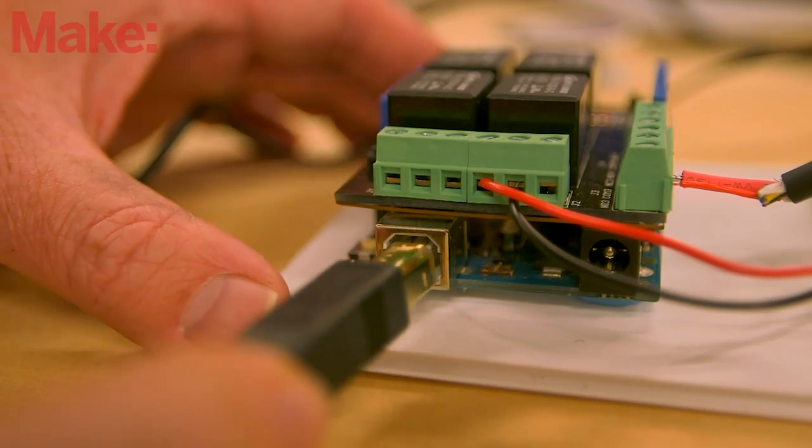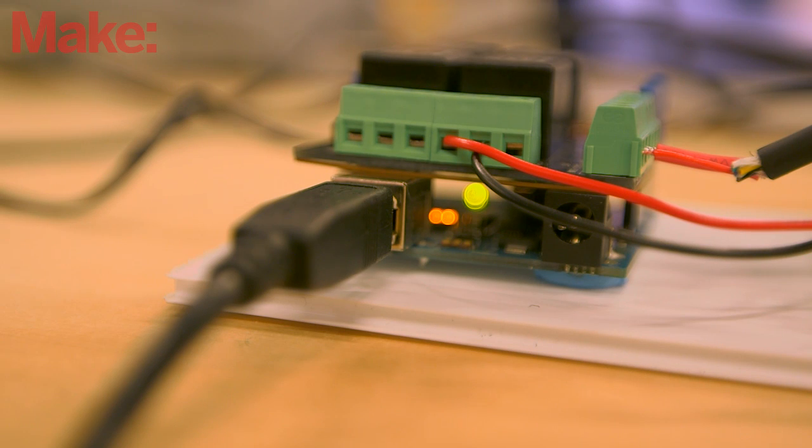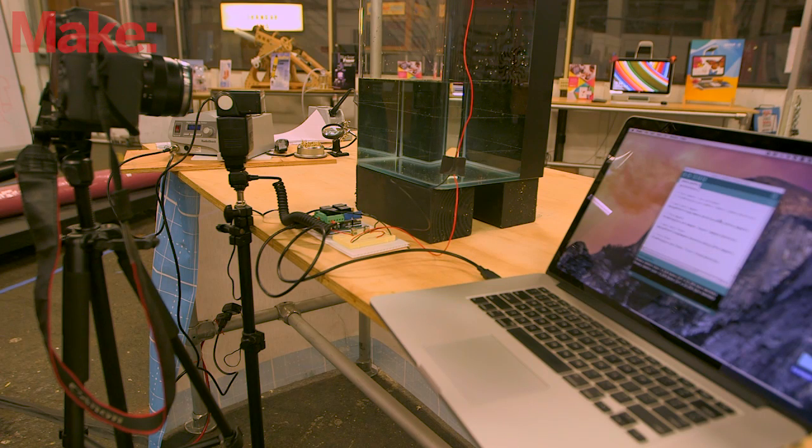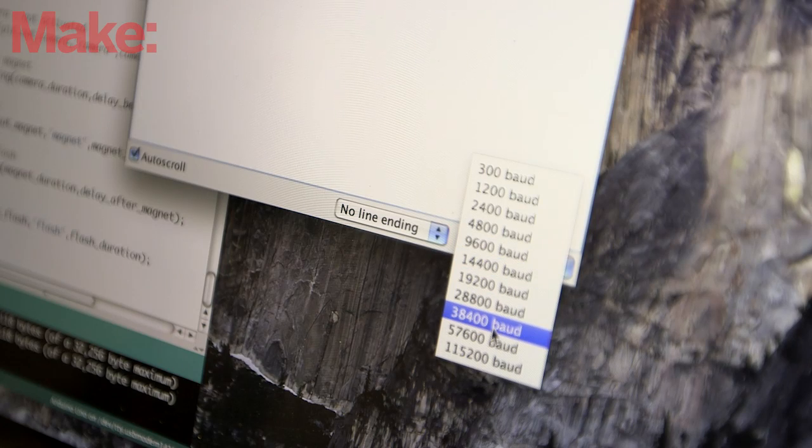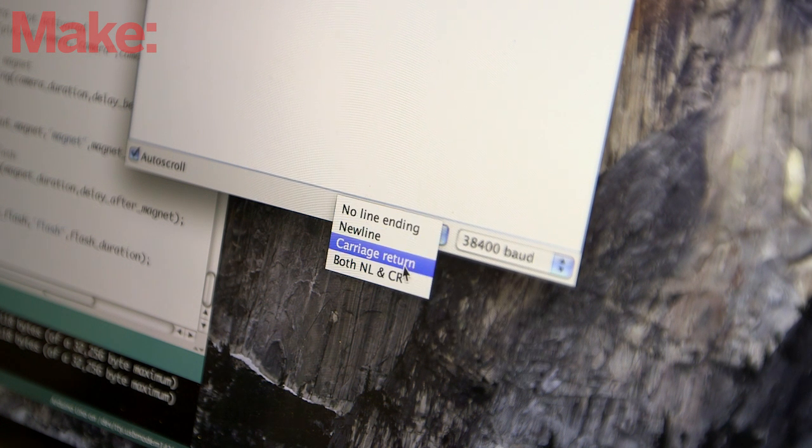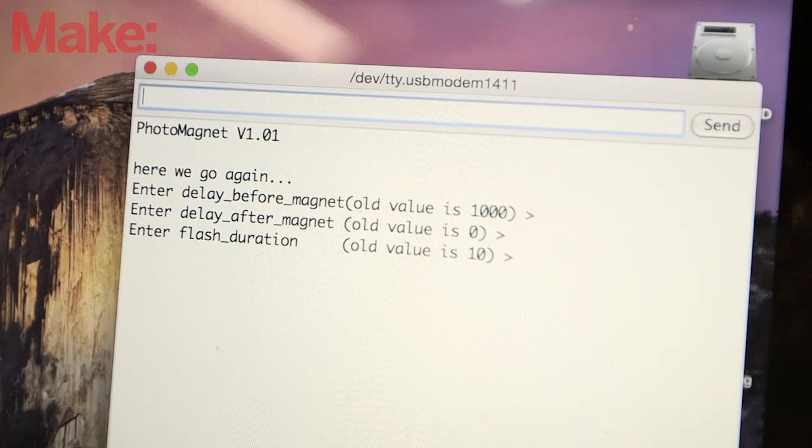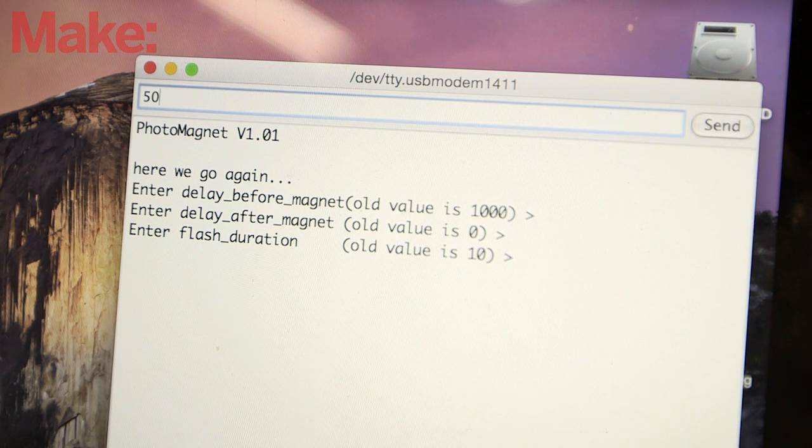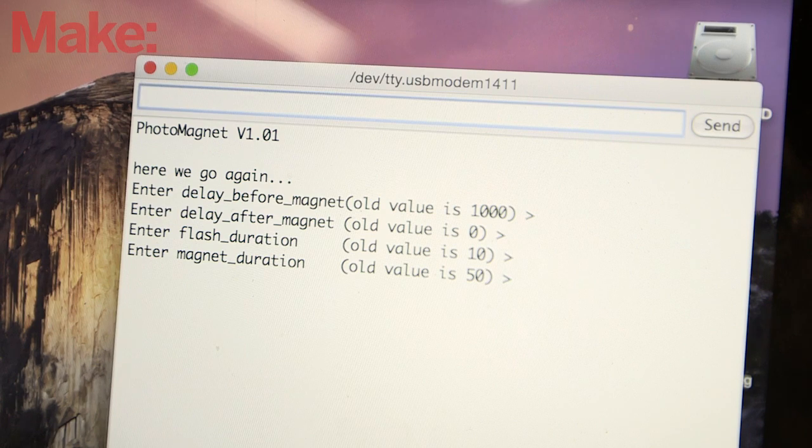Connect the Arduino to your computer and upload the project sketch. The sketch involves a lot of interaction with the board through a serial interface, so you'll need to have a computer connected as you use it. Set up and open the serial monitor in the Arduino IDE. You'll be manually inputting a number of different values: the delay before the object drops, the amount of time the rig stays open, the delay before the flash fires, and the duration of the flash.